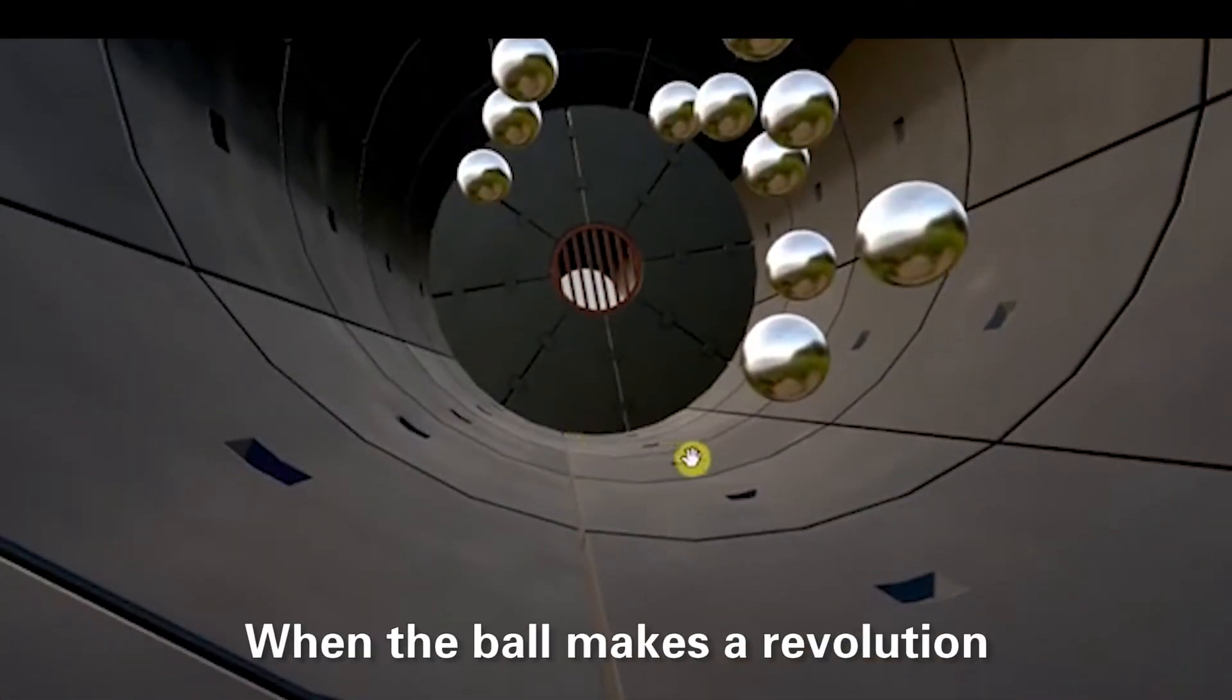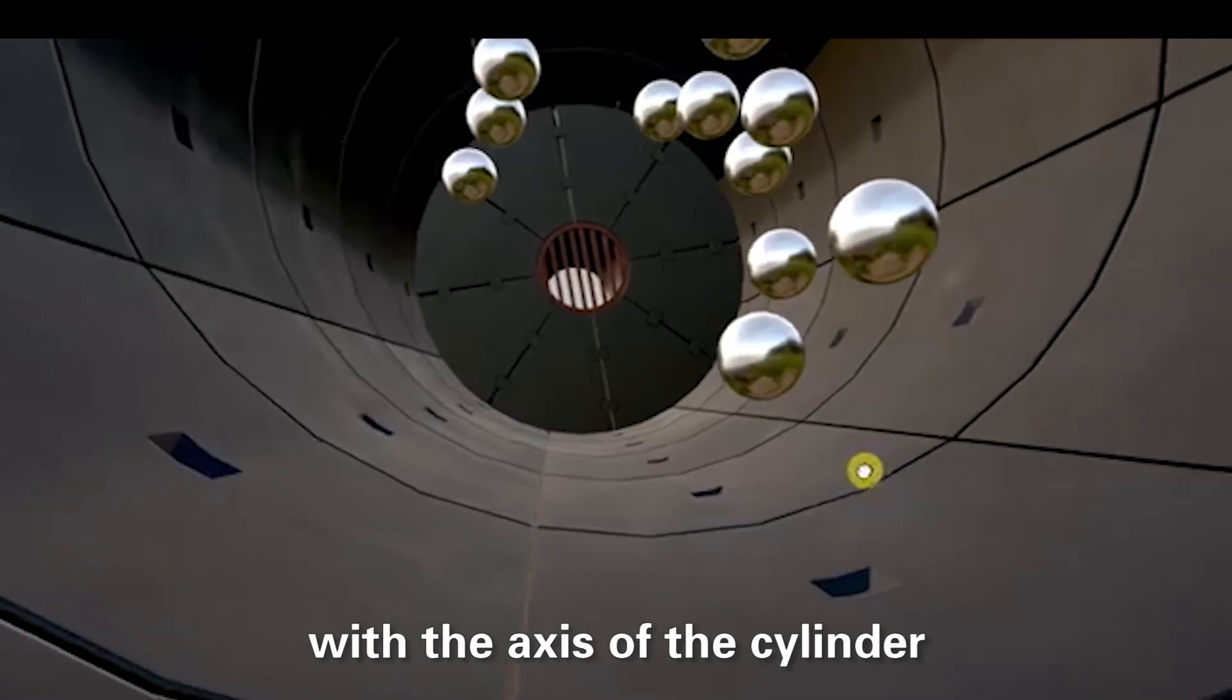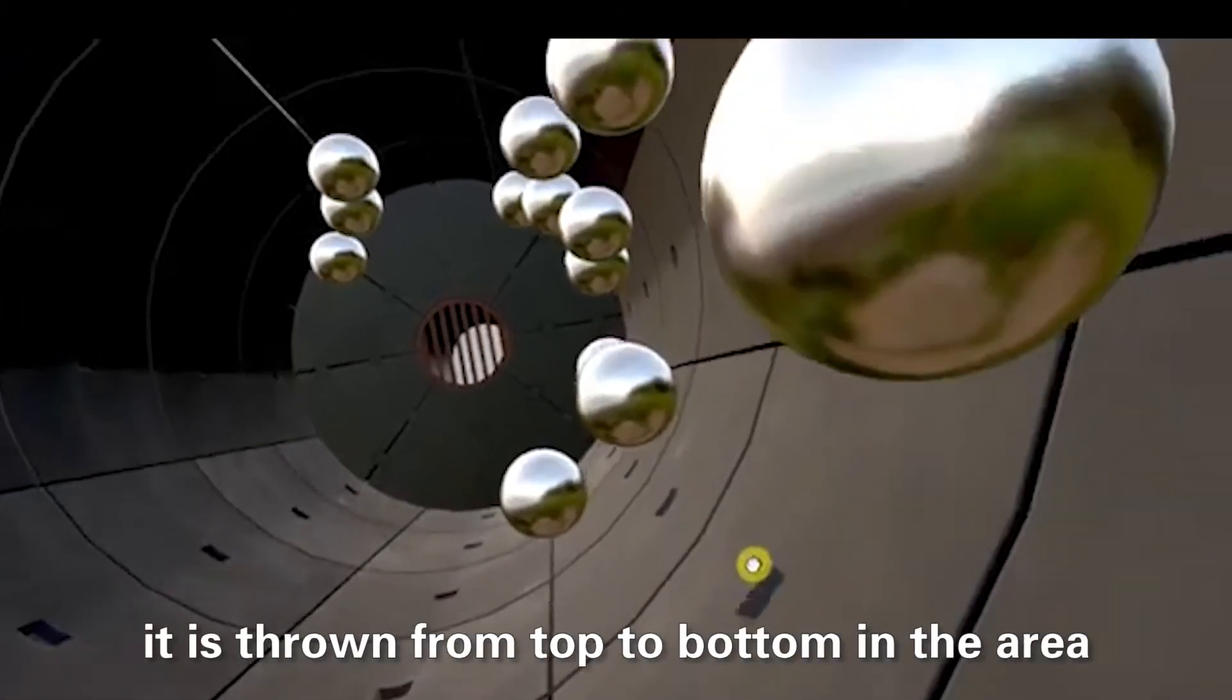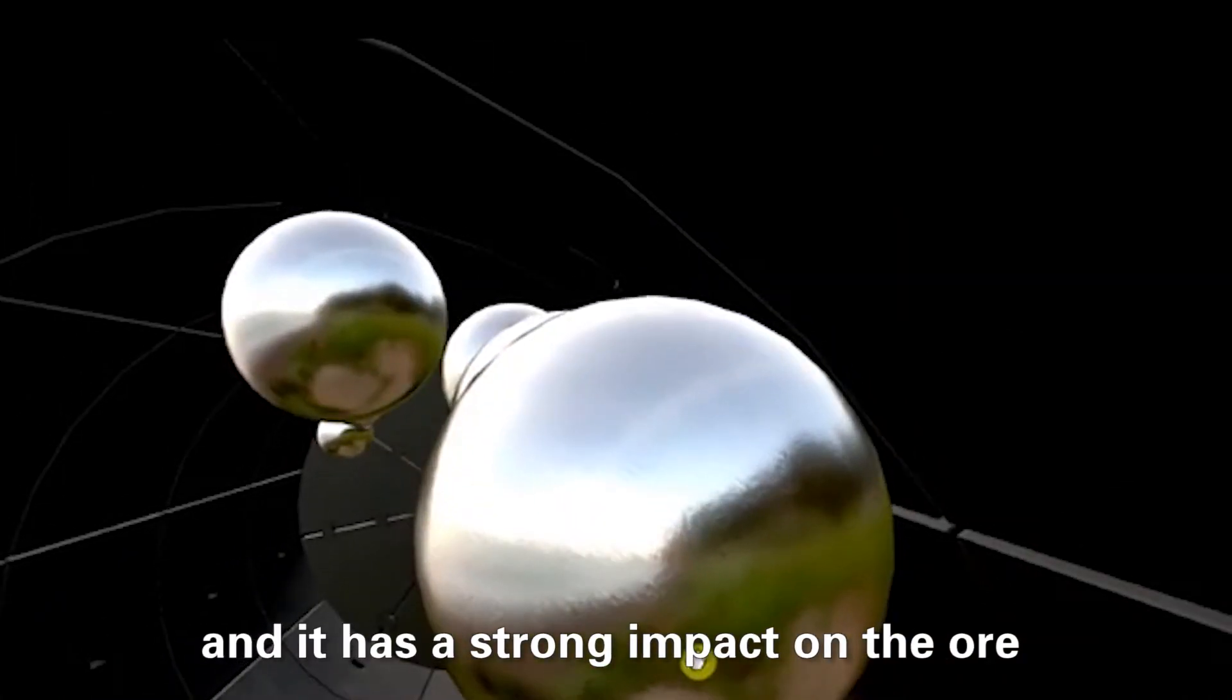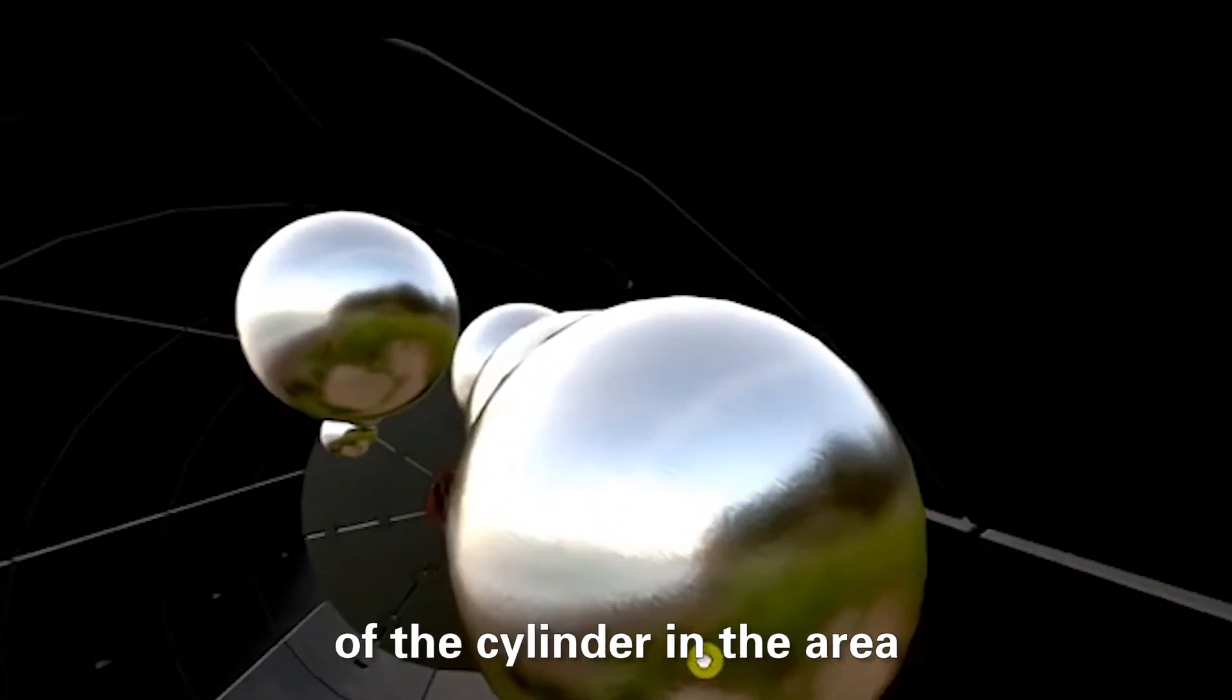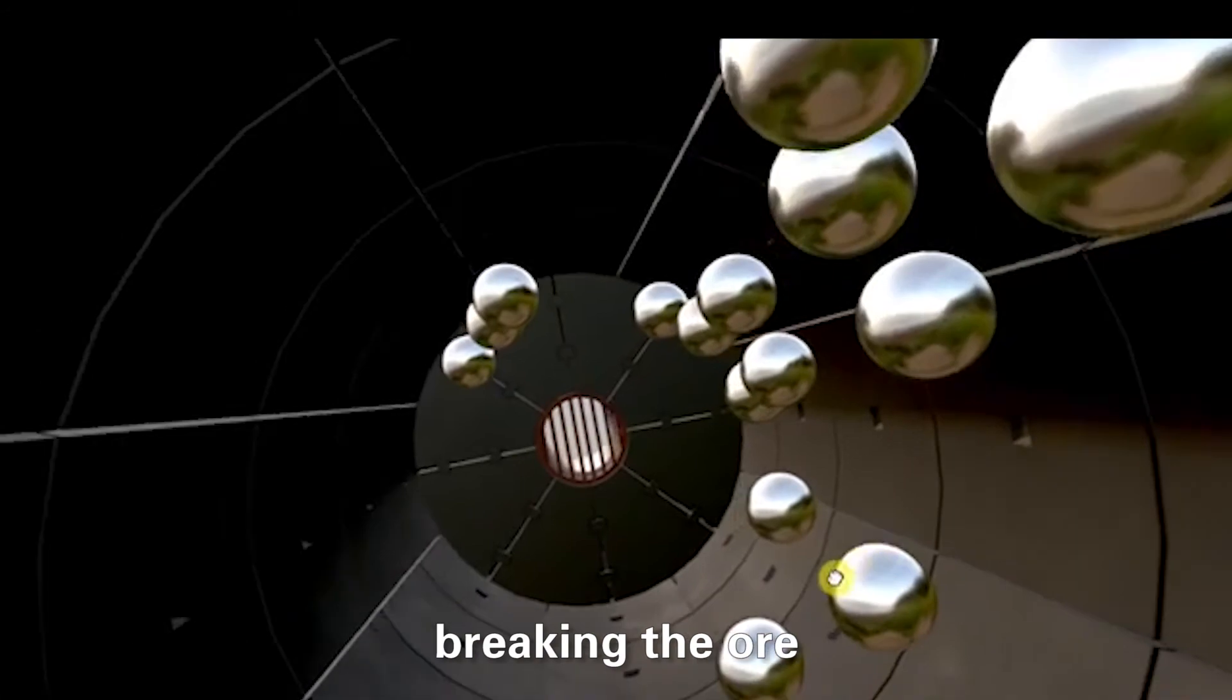When the ball makes a revolution with the axis of the cylinder, it is thrown from top to bottom in the area, and it has a strong impact on the ore in the cylinder, breaking the ore.